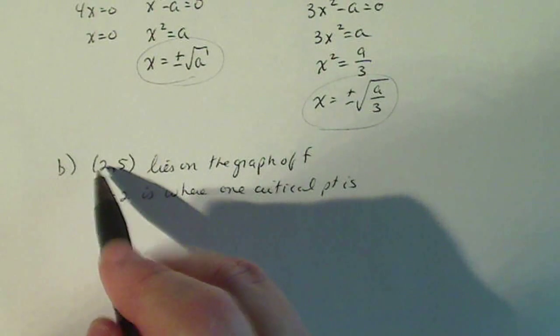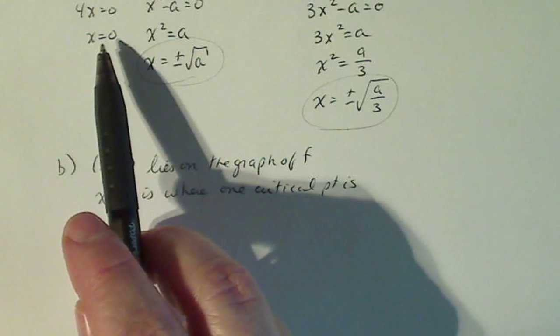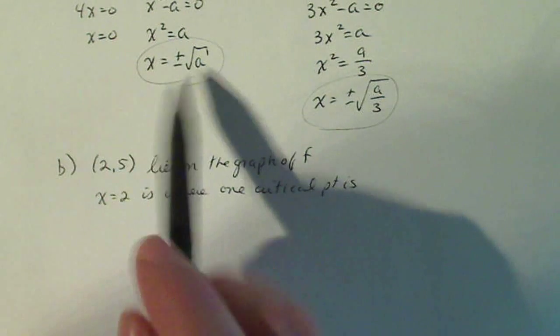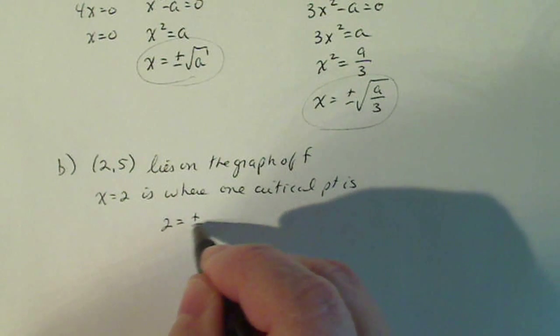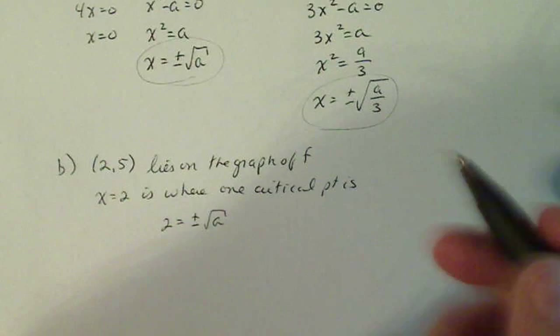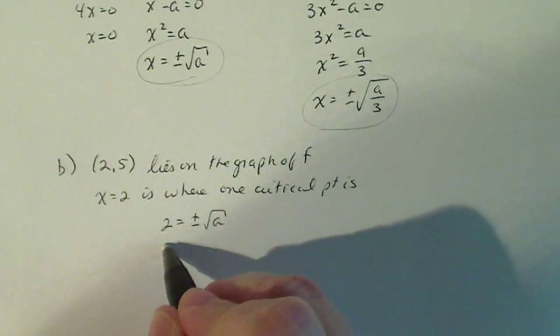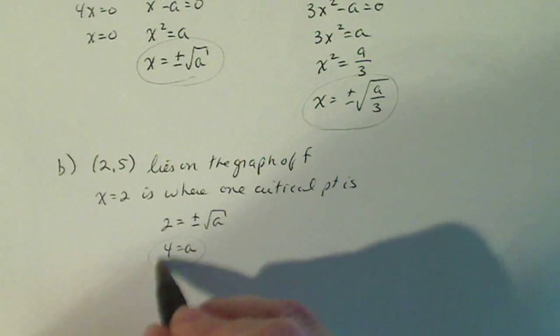That comes from 2 right here. So I know that x equals 0, but x equals plus or minus square root of a. So based on this portion, I know that 2 is supposed to equal plus or minus square root of a, which will give me the value for a. Squaring both sides, I have 4 equals a. So there's one value.